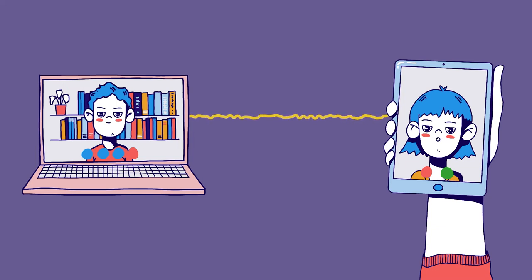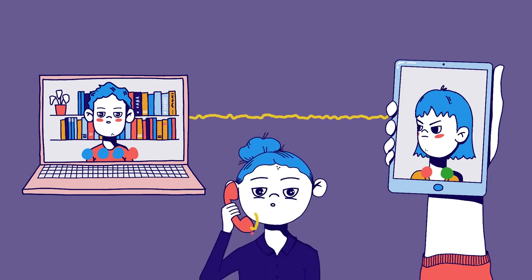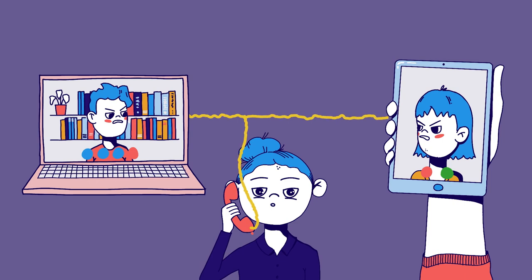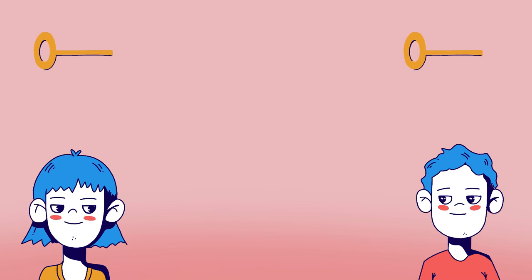To prevent this from happening in digital communication — say on a smartphone or computer — we could use quantum key exchange in the future. Here you can create a key together, and if someone like Eve reads along when the key is handed over, we would notice.